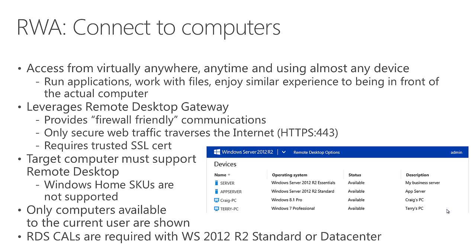The target computer you want to connect to must support remote desktop, meaning Windows Home SKUs aren't supported — you'll need at least the Pro SKUs. Also, only computers that are available on a permission basis to the current user logged into RWA are going to be shown — it's a security-trimmed interface. If you sign in as the administrator you'll see all computers in the environment, but for example if Craig logs in, he'd only see his own PC and not necessarily Terry's PC if he doesn't have permission to connect to it.